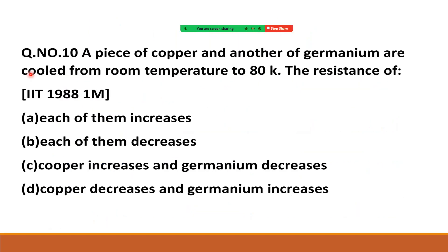Problem 1: A piece of copper and another of germanium are cooled from room temperature to 80 K. Copper is a conductor so α is positive — decreasing temperature means resistance decreases. Germanium is a semiconductor so α is negative — decreasing temperature means resistance increases.